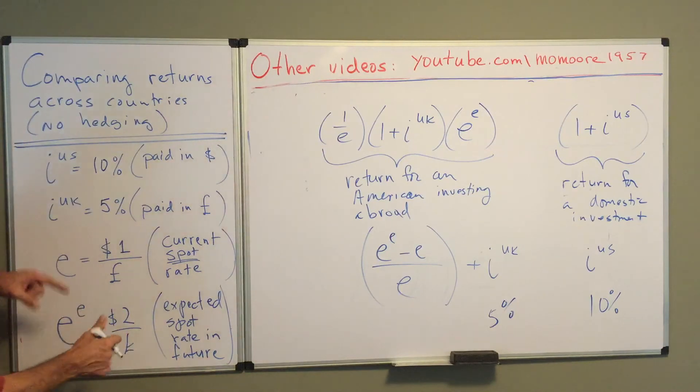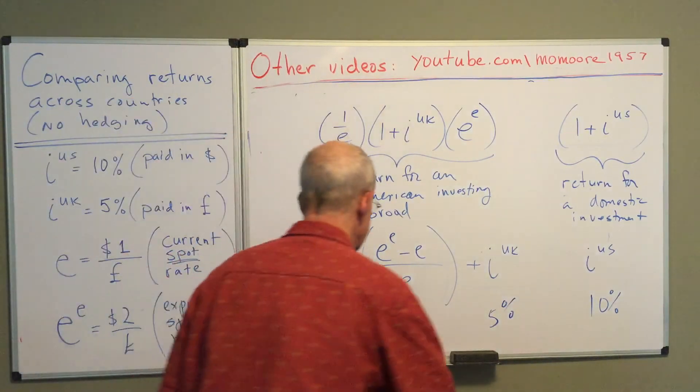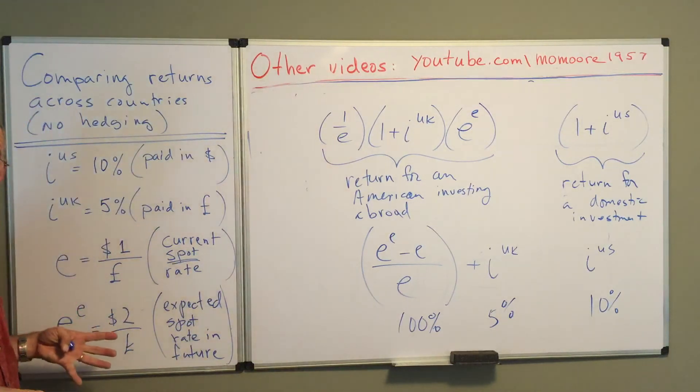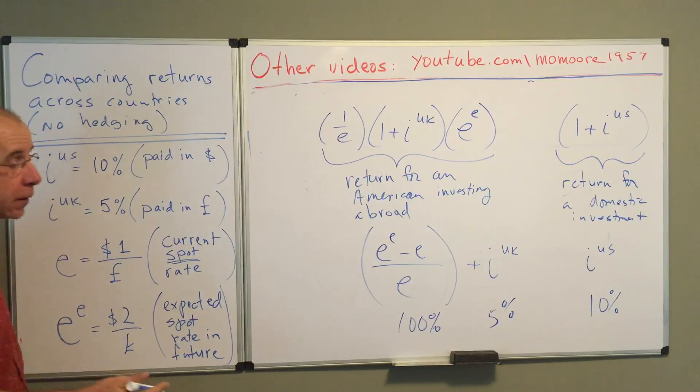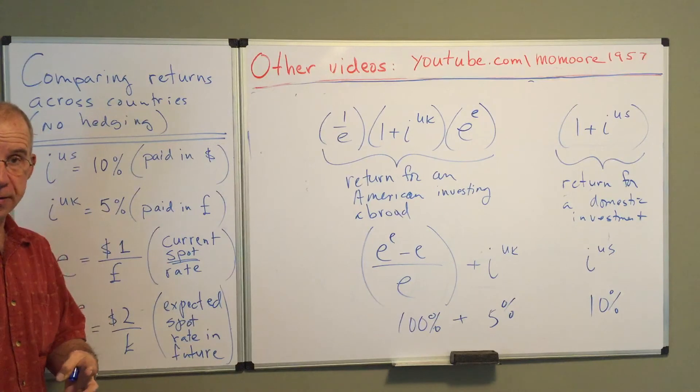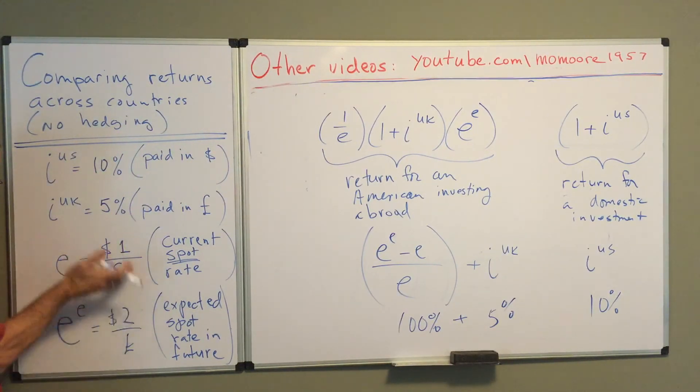But what you have here is, if you look at this part of the equation, the expected exchange rate minus the spot, divided by the spot, so 2 minus 1 is 1, divided by 1 is 100%. That big depreciation of the dollar, the big appreciation of the pound is going to increase the attractiveness of the foreign asset. And so when you compare these returns across the countries, you take into account not only the interest rate, but the expected appreciation and depreciation of the currency.